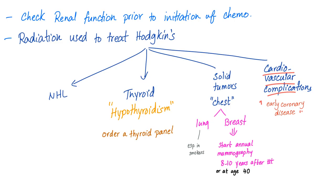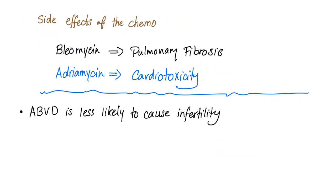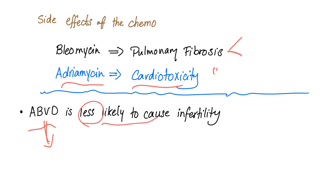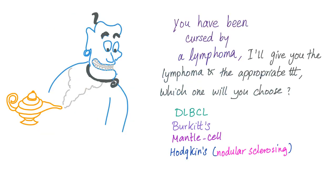Regarding side effects of chemotherapy: bleomycin can lead to pulmonary fibrosis, causing cough and shortness of breath. Adriamycin leads to cardiotoxicity, specifically cardiomyopathy. The ABVD chemotherapy regimen is less likely to cause infertility — not impossible, but less likely. If you could choose a lymphoma, you should choose the nodular sclerosing subtype of Hodgkin's, as it has an excellent prognosis and a great response to treatment.